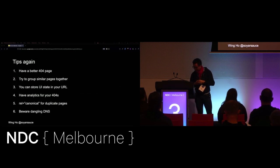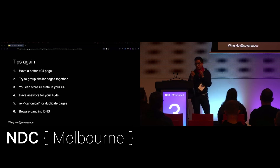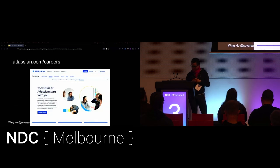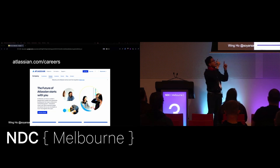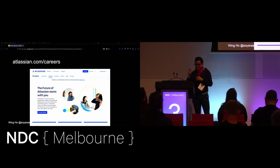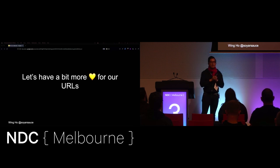So to recap: have a better 404 page, try to group similar pages together, store your UI state in the URL if you have that use case, get some analytics, use rel=canonical, and keep in mind the dangling DNS scenario. Obligatory hiring thing — if you go to atlassian.com/careers, that itself is a redirect to the full URL, and it has a whole bunch of open roles that Atlassian is hiring for all across Australia. Let's have a bit more love for our URLs — that's all I have for you today, thanks very much.